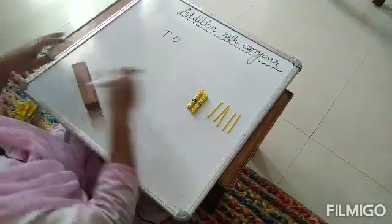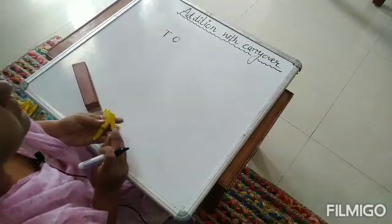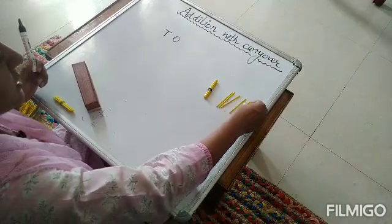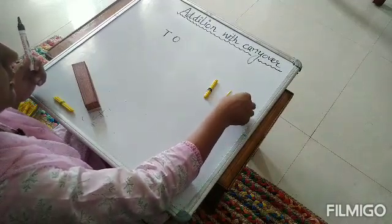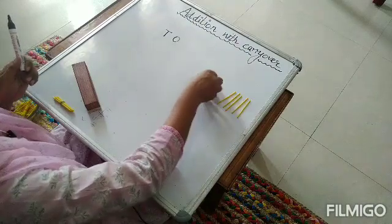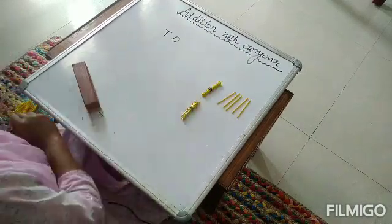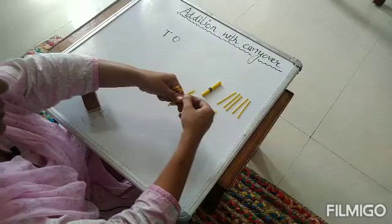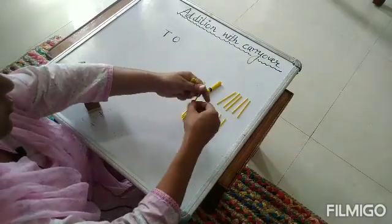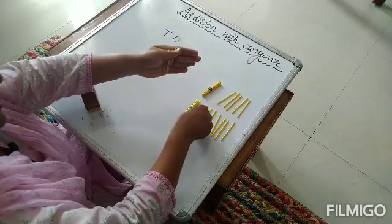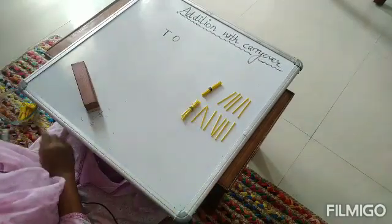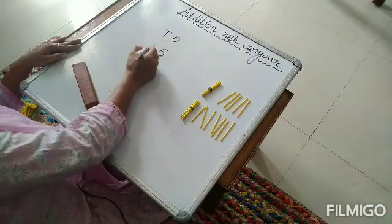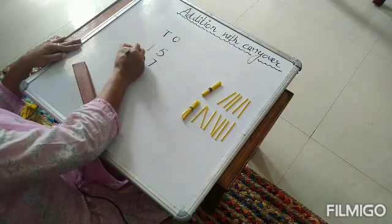Let's see the next example. Let's take a different example here. We have 1 bundle and 5 loose sticks. I am taking 1 bundle and 5 loose sticks. And 1 bundle again and I am taking 7 loose sticks: 1, 2, 3, 4, 5, 6, 7. So I am having 2 numbers—number 15 and number 17.